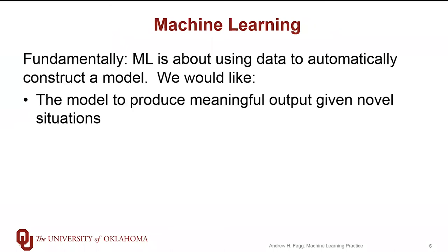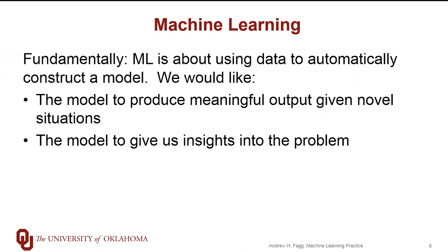And much like the human endeavor, we want our models to produce meaningful and high quality predictions given novel situations. Models also, if we do them right, can give us key insights into the data that we're collecting. For example, if we are studying severe weather phenomena, we can certainly construct a model that makes predictions about when the onset might be of a severe weather event. But in the process of constructing that model, we might be able to understand something more about the underlying physics that actually lead to the formation of these severe weather events. So that's the very broad picture of machine learning, and now let's talk a little bit more about the different kinds of machine learning methods.